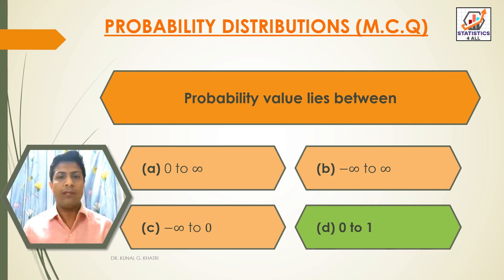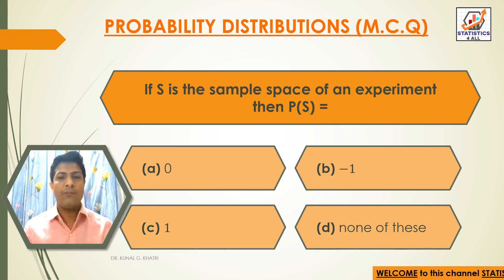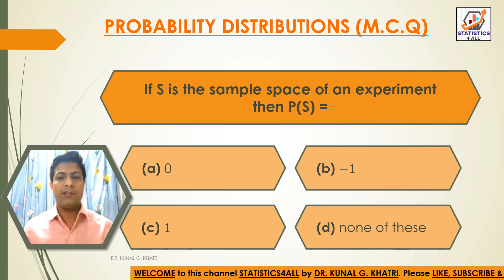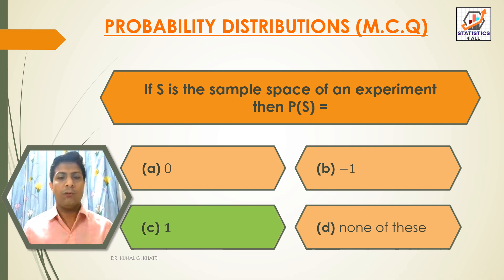Next question: if S is the sample space of an experiment, then P of S is equal to. Option A: 0. Option B: minus 1. Option C: 1. Option D: none of these. The answer is option C, 1.